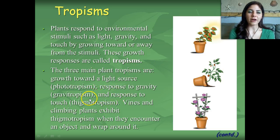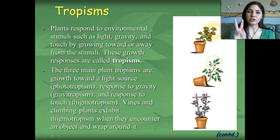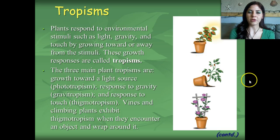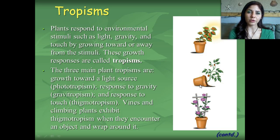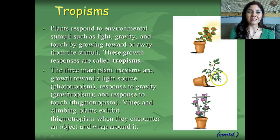We also have gravitropism, which is the response of the plant to gravity. In gravitropism, we have two different types: positive and negative. Positive gravitropism is exhibited in the roots of the plant — the roots are growing towards the force of gravity, towards the center of the earth. The other parts of the plant, the leaves, fruits, and stems, are growing against the pull of gravity, and we call that a negative tropism.